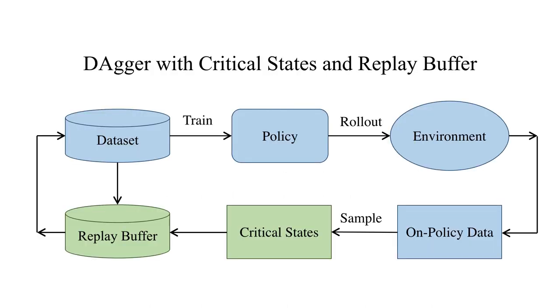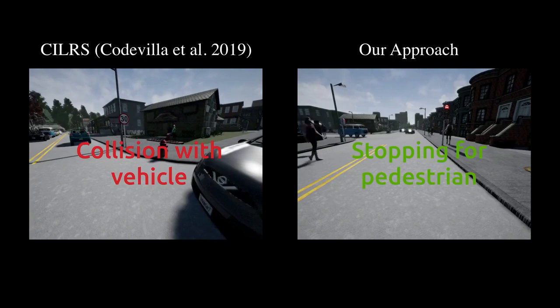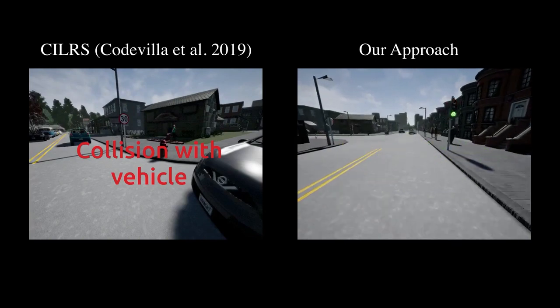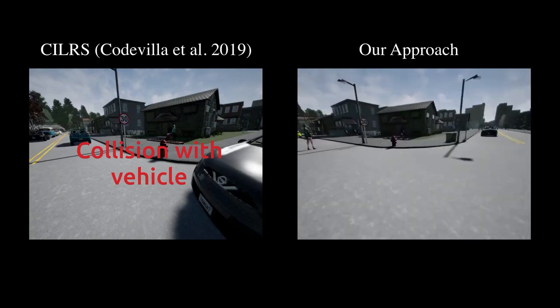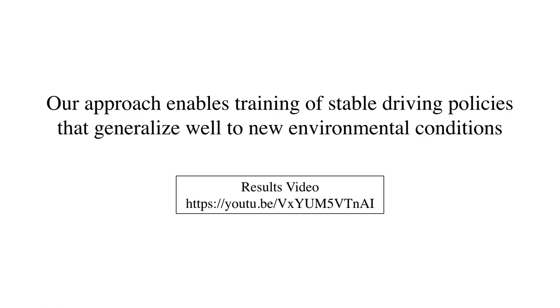To address these limitations, we present a modified version of the dagger algorithm. We propose to sample critical states from the on-policy data and include a replay buffer mechanism that leads to a better training data distribution for the driving policy. From the driving video, it is evident that our approach enables a policy to follow traffic regulations and avoid collisions resulting in successful turning at the intersection. For more details, please see our paper and results video.